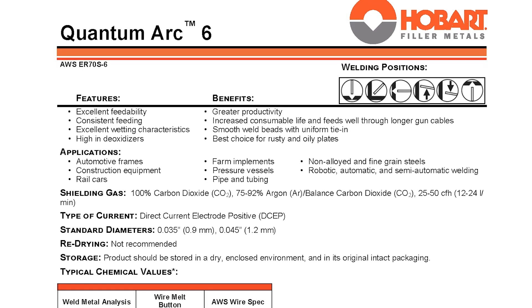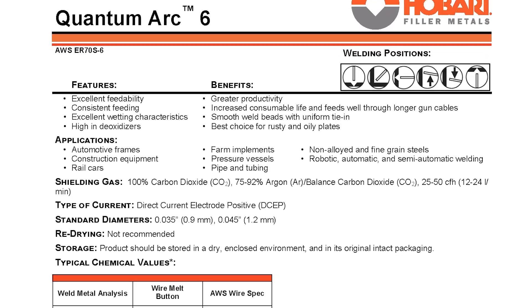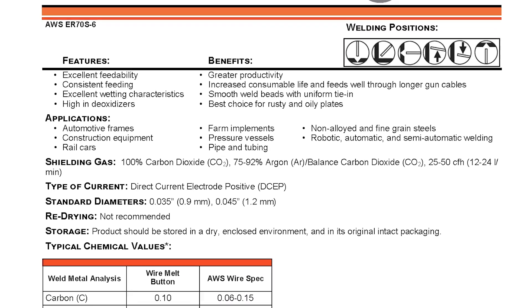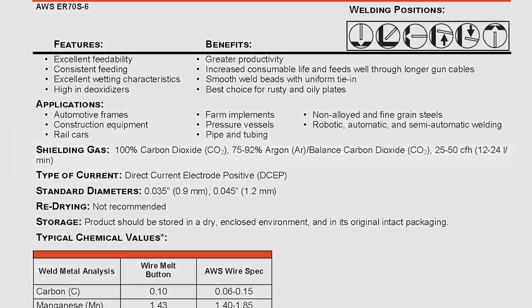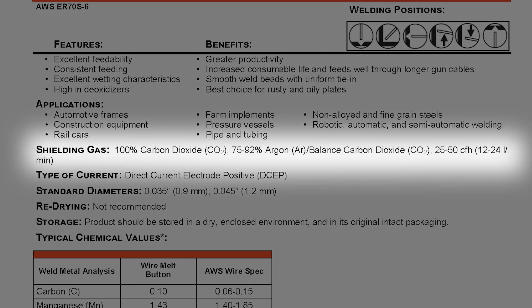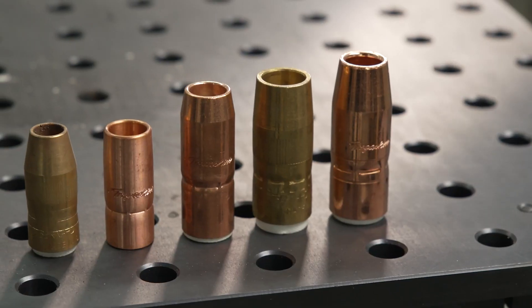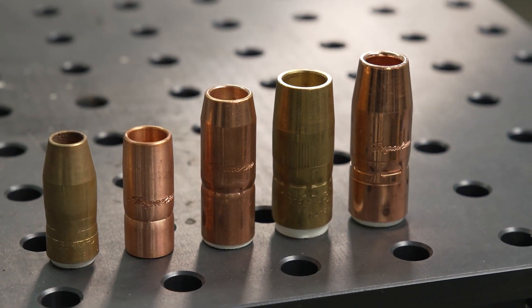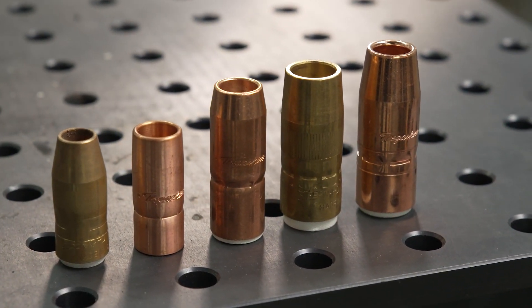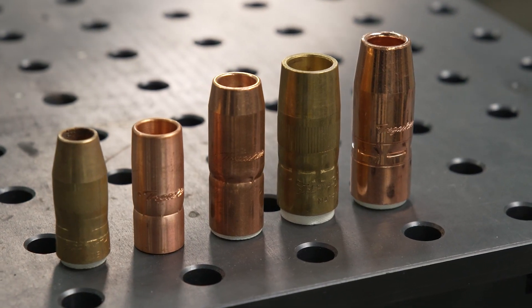Using the correct flow rate is important, but finding it can be a challenge at times. Hobart's data sheets will specify what type of shielding gas to use and a range of flow rates for the wire. A common range for welding steel is 30 to 40 cubic feet per hour. Typically, your flow rate can be set lower for CV short circuit or RMD when smaller nozzles are used. When welding with CV spray and pulse spray, larger nozzles and higher flow rates are used.